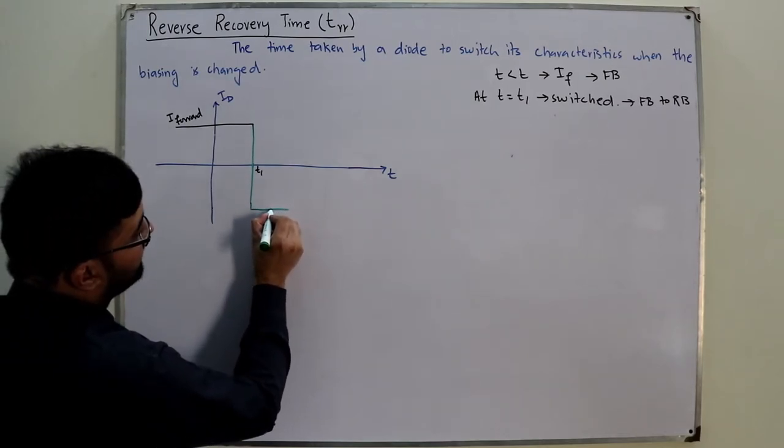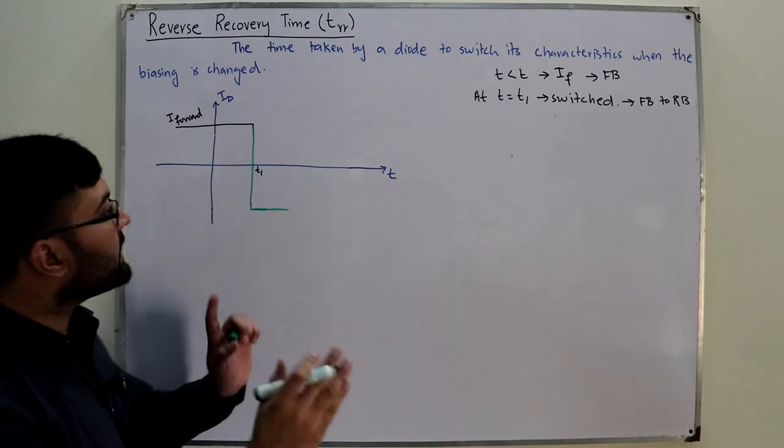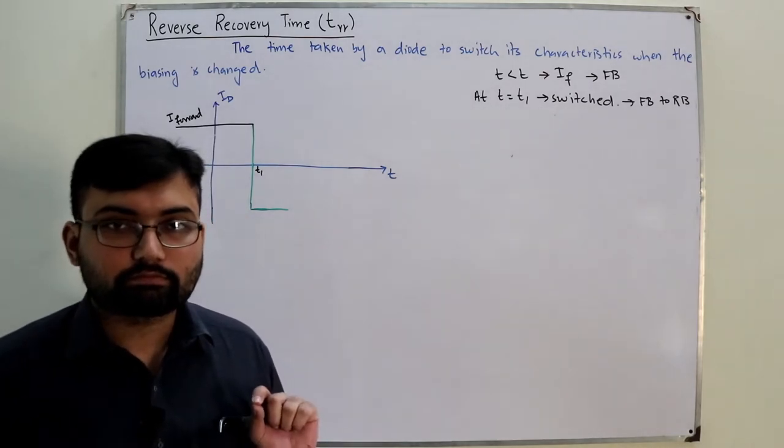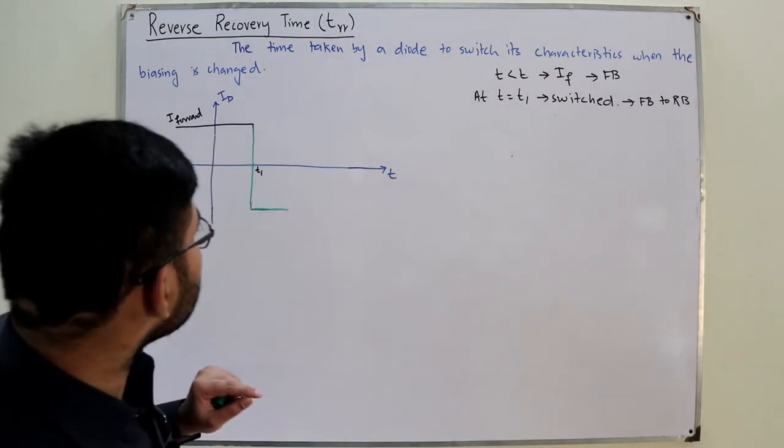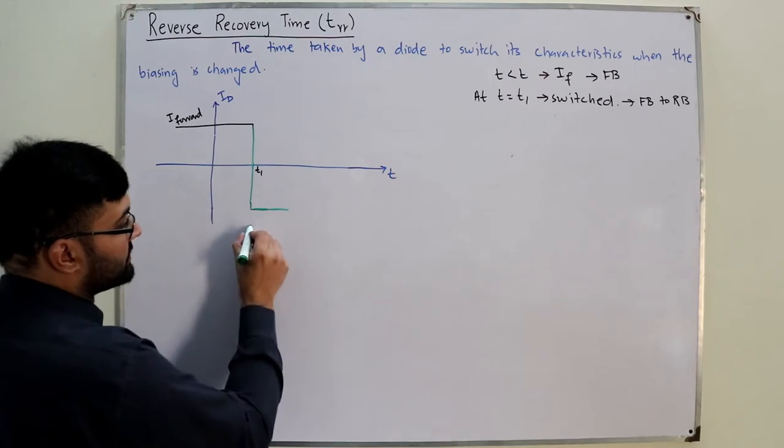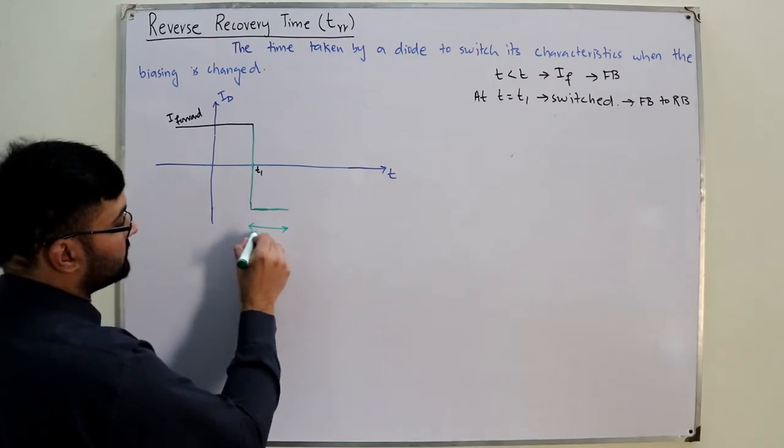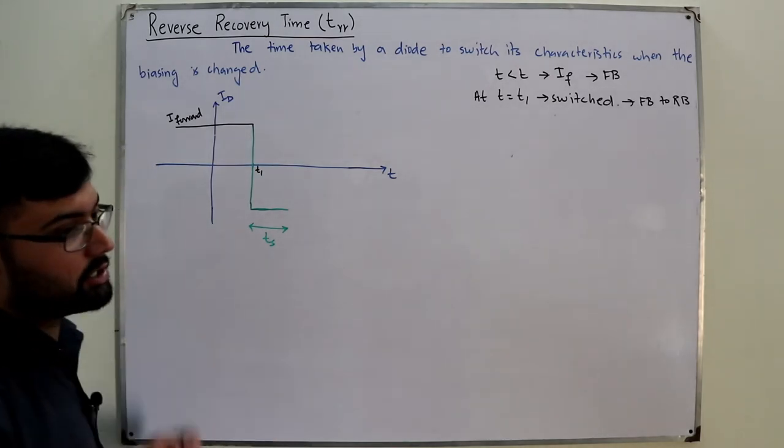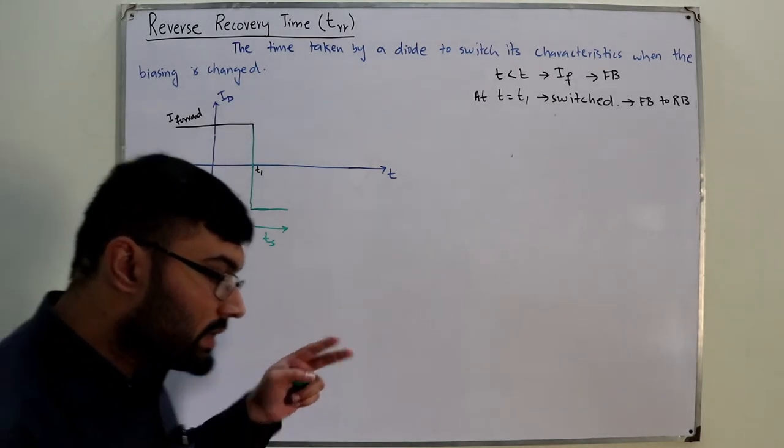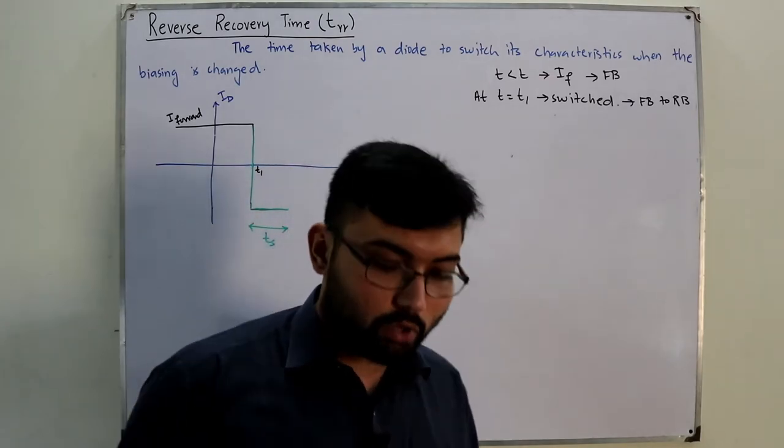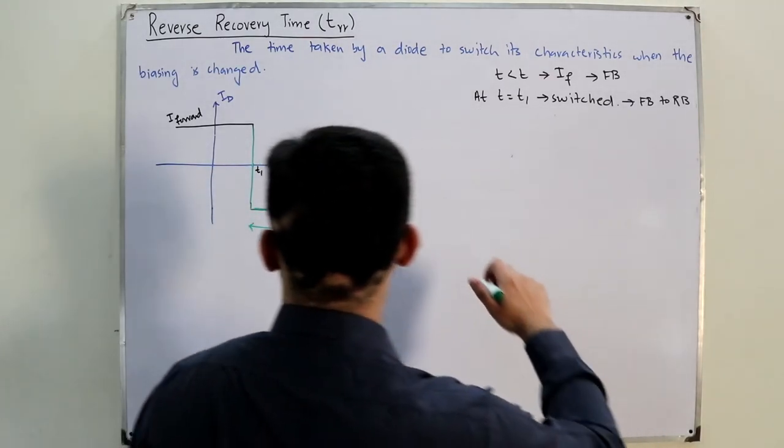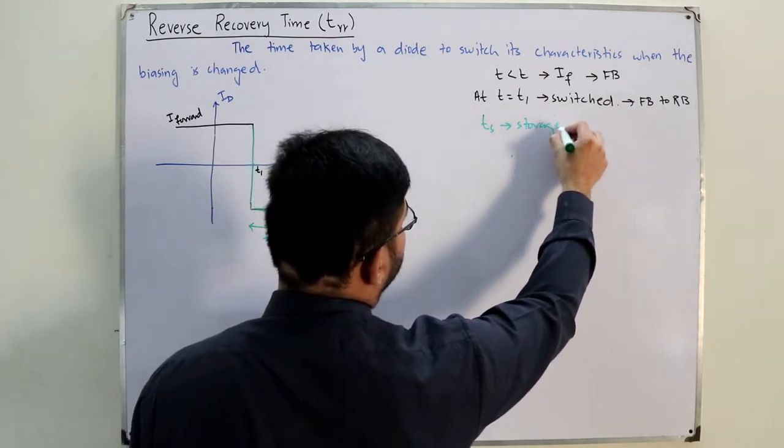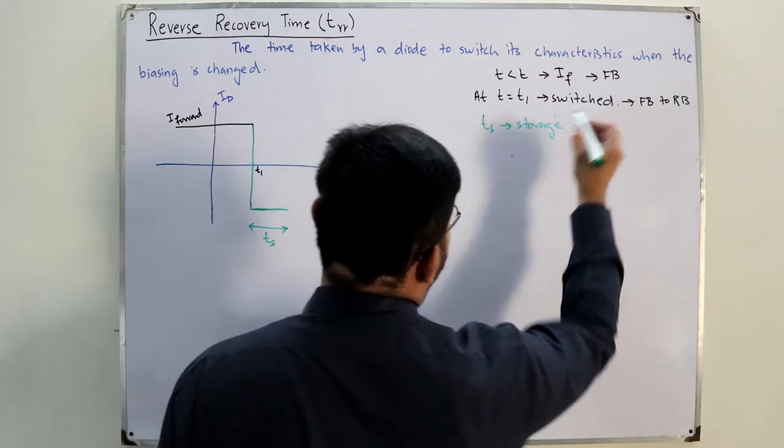It will not drop. It will store this current for a certain time. It will not directly go into the reverse state. It will store this current. This time is called T_S. Store this current means it will let pass the same amount of current without any effect of the voltage for a little amount of time. So this T_S is the storage time.